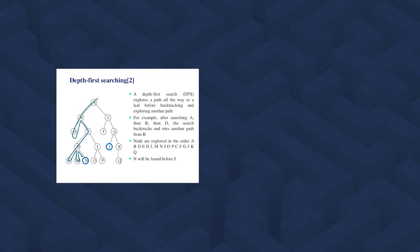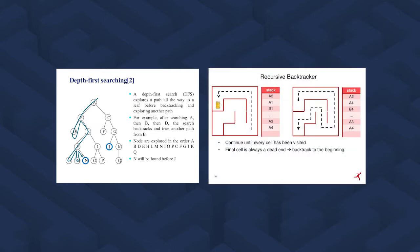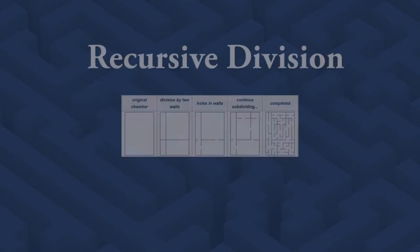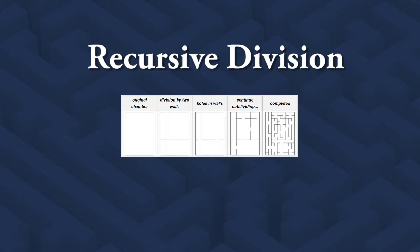There is also the depth-first algorithm, as well as the recursive backtracker, which are also popular for maze generation. A somewhat simpler method, called recursive division, involves starting with an open chamber, dividing it with two walls, creating random openings, then dividing each sub-chamber with subsequent repetition of these steps until the overall chamber is filled with the desired paths.